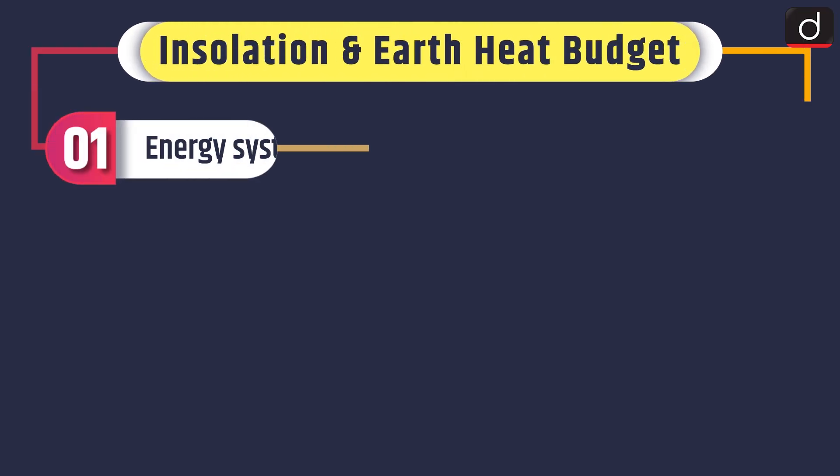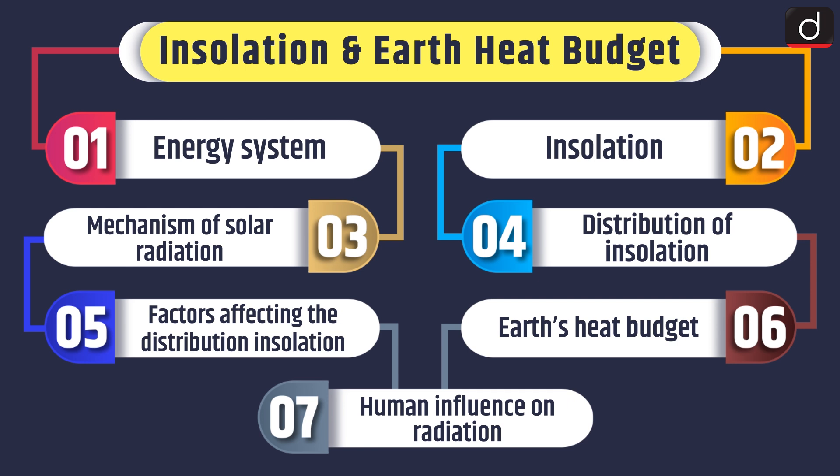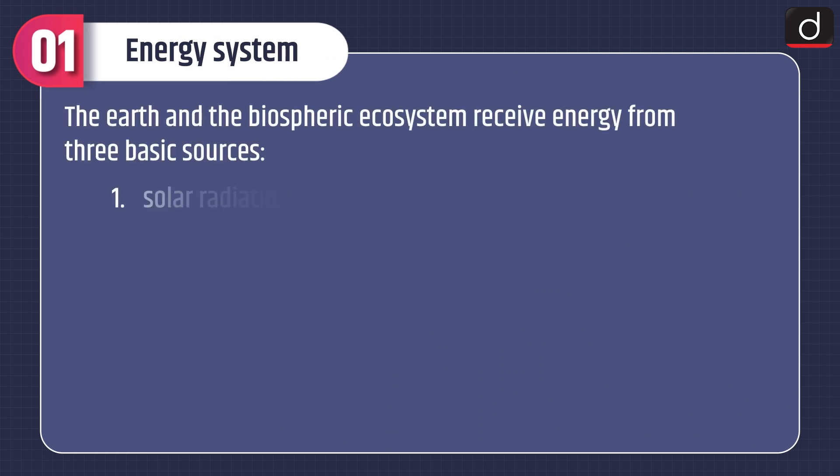Hello everyone, welcome to the Mind Map program of Drishti IAS. This program covers relevant and important static portions from a UPSC point of view. In today's program we will cover the Geography subject, and this video covers insolation and Earth's heat budget. Under this topic we will discuss the energy system, insolation, mechanism of solar radiation, distribution of insolation, factors affecting the distribution of insolation, Earth's heat budget, human influence on radiation, and practice questions for both Mains and Prelims.